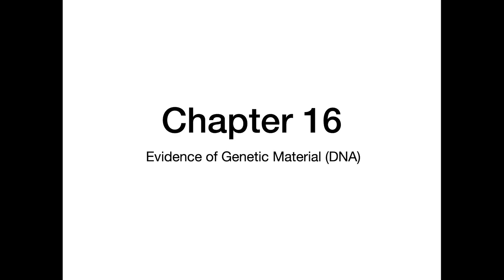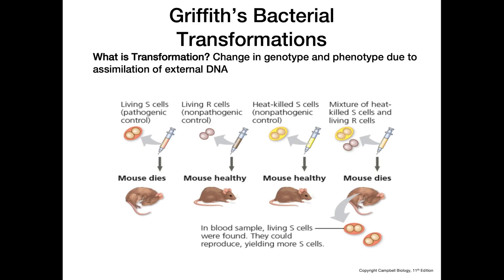This video is going to be about the evidence of DNA as a genetic material. The first experiment we're going to look at is Griffith's bacterial transformation. A transformation is a change in the genotype and the phenotype of an organism due to its absorbing of external DNA.